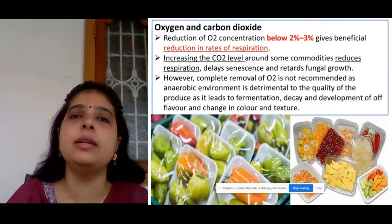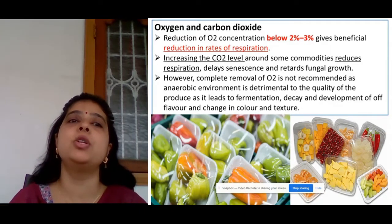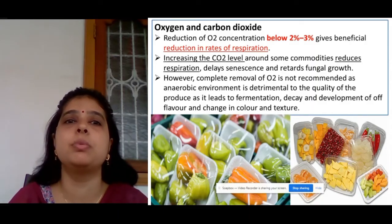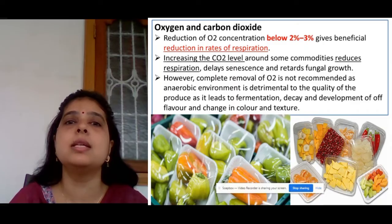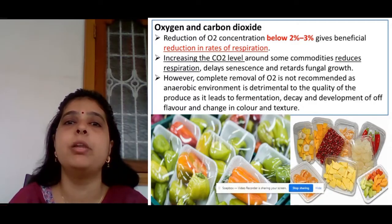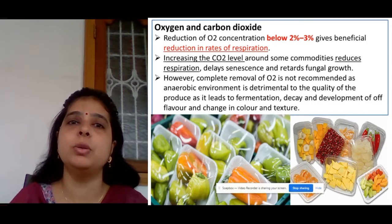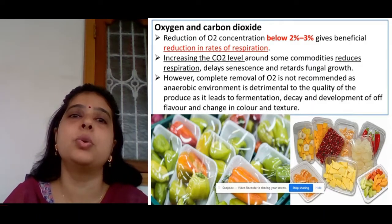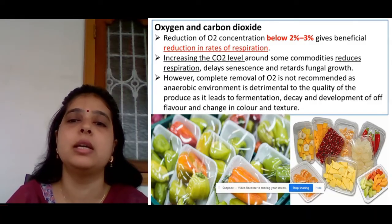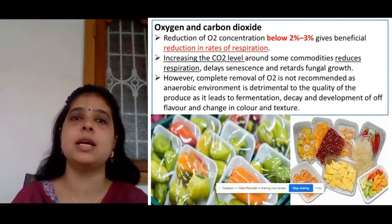The next factor is oxygen and carbon dioxide. In general, the oxygen concentration in air is 21%, but when you reduce the oxygen concentration below 2–3%, there is a reduction in the rate of respiration. Less respiration means less ethylene evolution and an increase in shelf life of the produce. However, complete removal of oxygen is not recommended as it leads to fermentation, which deteriorates the flavour and quality of the produce. The terms controlled atmospheric packaging and modified atmospheric packaging are based on the principle of maintaining oxygen and carbon dioxide concentration around the produce.